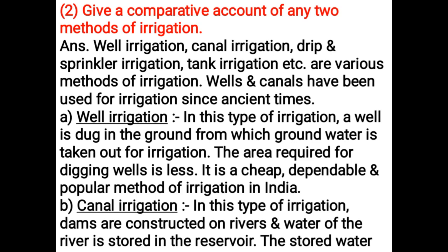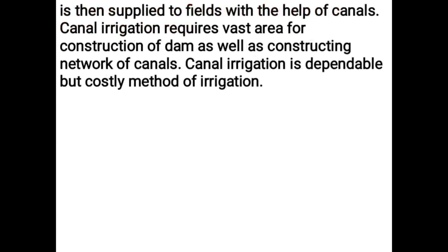In canal irrigation, dams are constructed on rivers and water is stored in a reservoir. The stored water is then supplied to fields through a network of canals. Canal irrigation requires a vast area for dam construction as well as canal networks. It is a dependable but costly method of irrigation.